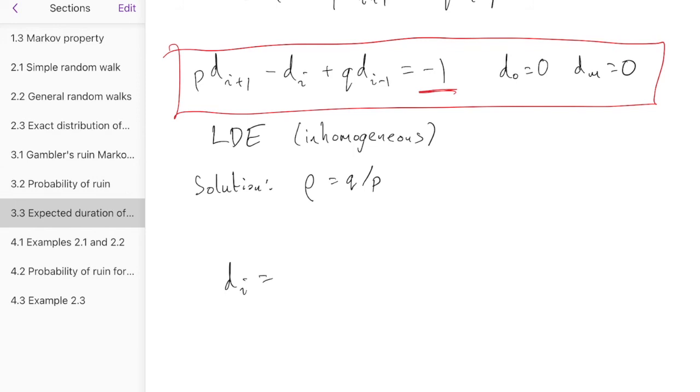So we have, if rho is not equal to 1, we have this slightly complicated expression: 1 over q minus p, a minus m, 1 minus rho to the a, 1 minus rho to the m. And that's if rho is not equal to 1.